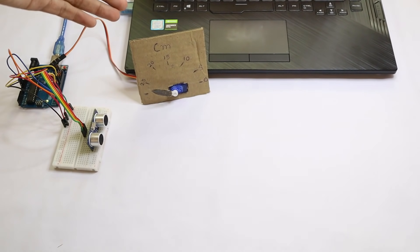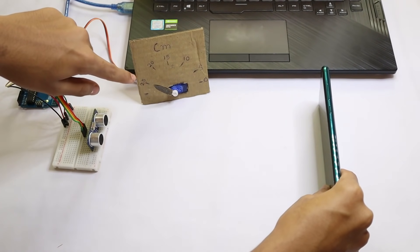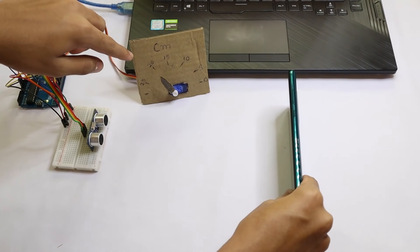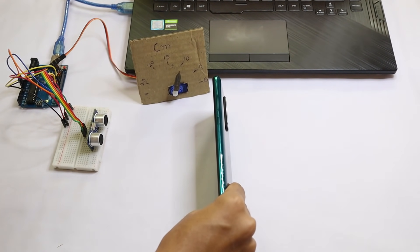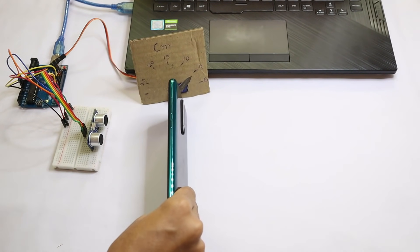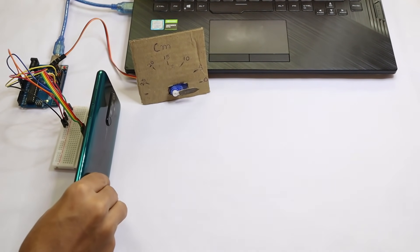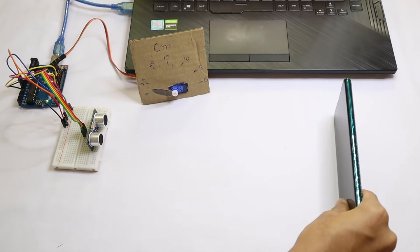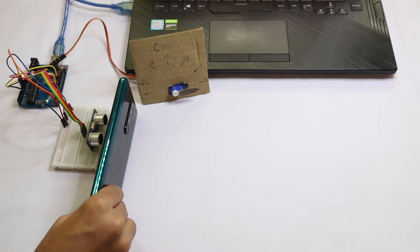Now I have also labeled it 0, 5, 10, 15, 20, 25 centimeters. And now if I take a phone and put it right here, you can see it's at 25. Now you can see it's 20, now 15, that's 10, that's 5, and now 0. As I move away you can see the centimeter increase, and as I move closer you can see the centimeter decrease.